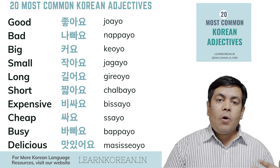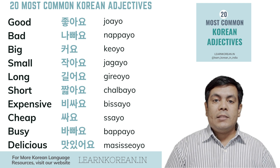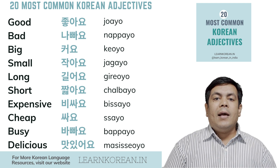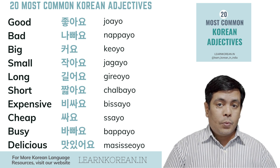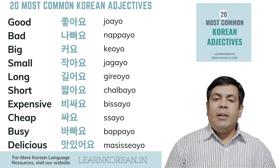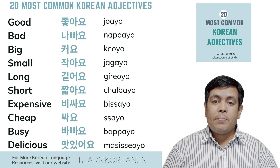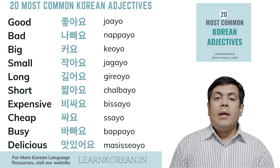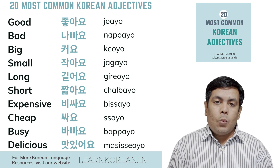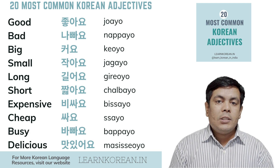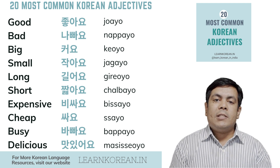The third adjective is 'to be big', and number four is 'to be small'. Then number five is 'long': kiroyo. And then we have 'short', to be short.